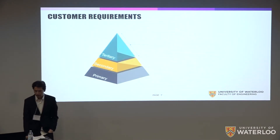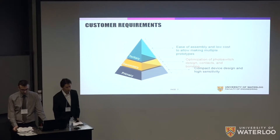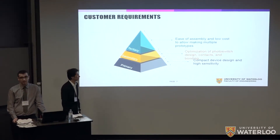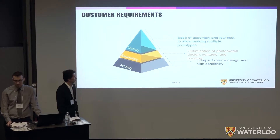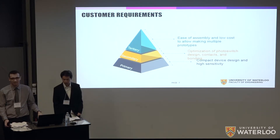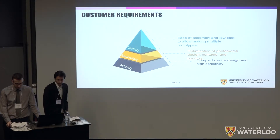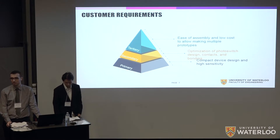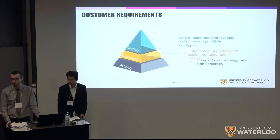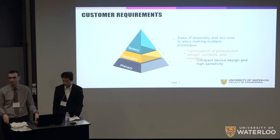For the customer requirements, we have three main requirements. First, it has to be compact and sensitive enough to be used by Harmon's group for his experiments. Second, the photoswitch has to be designed in a way that it can form proper contact with the circuits — optimizing that is one of the key challenges. And lastly, the device has to be reasonably cheap and easily reproduced, so that if future devices are needed they can be replicated.